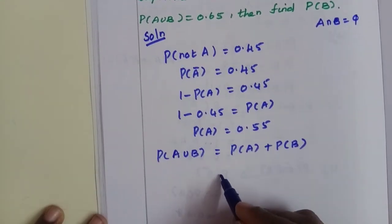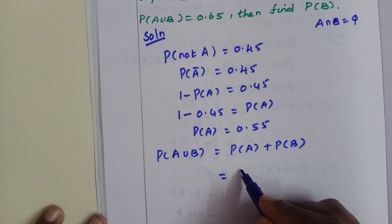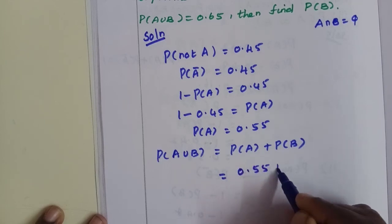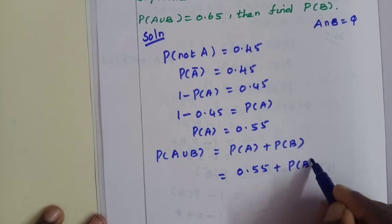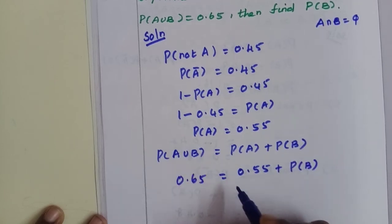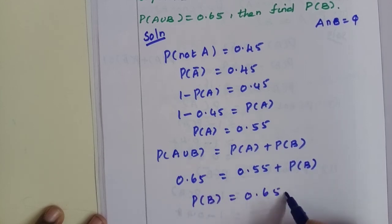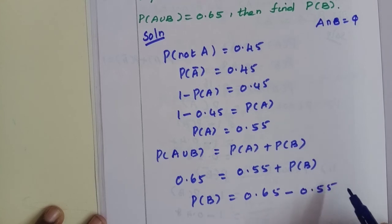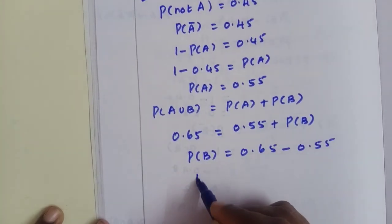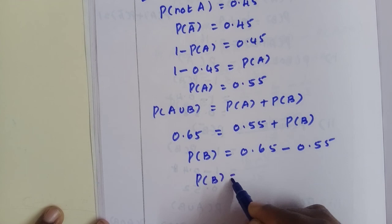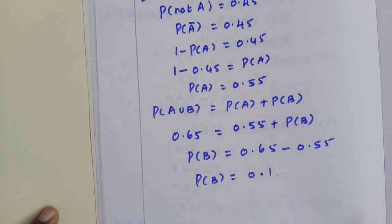So substituting the values: 0.55 plus P(B) equals 0.65 because A union B is 0.65. P(B) equals 0.65 minus 0.55, so P(B) equals 0.1.